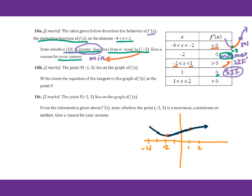For 10b, the point negative 2 lies on the graph of f of x. Write down the equation of the tangent to the graph of f of x at this point P. We know this is a minimum point. Therefore the tangent line will be a horizontal line, that is y equals 3.